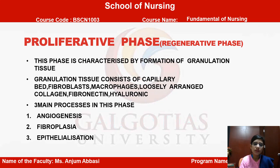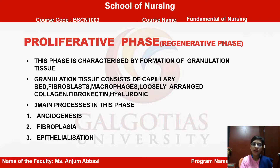The next phase is characterized by formation of granulation tissue. Granulation tissue consists of capillary bed, fibroblasts, macrophages, loosely arranged collagen, fibronectin, and hyaluronic acid. There are three main processes in this phase: angiogenesis, fibroplasia, and epithelialization.